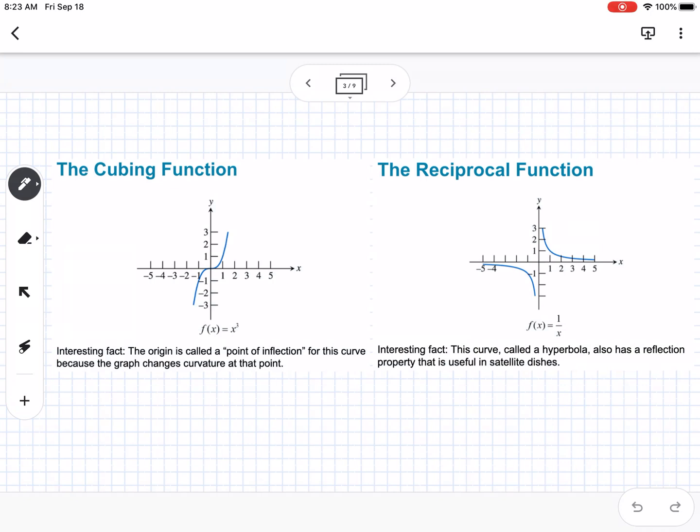Next we have the cubing function, also called cubic, with f(x) = x³. Interesting fact: the origin is called a point of inflection for this curve because the graph changes curvature at that point.